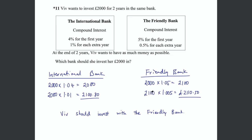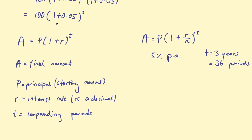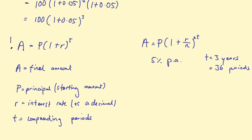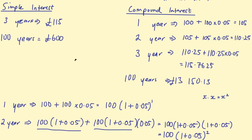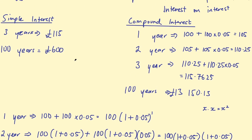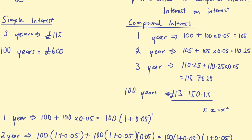I hope you found those examples useful. Going back to that formula: the amount you earn from compound interest equals the principal — your starting amount — multiplied by (1 + rate) to the power of the number of compounding periods. Make sure you go back and check my figure for the 100-year calculation, and look out for part 2 of this video where I'll talk about the number e and what that has to do with compound interest. Thanks for watching — I'll see you in the next one, bye for now.